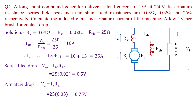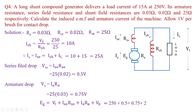Once these voltages are calculated, Eg = Vt + Ia·(Rse + Ra) + Vb = 250 + 0.5 + 0.75 + 2 = 253.25 volts. This is the generated voltage for the long-shunt compound generator.